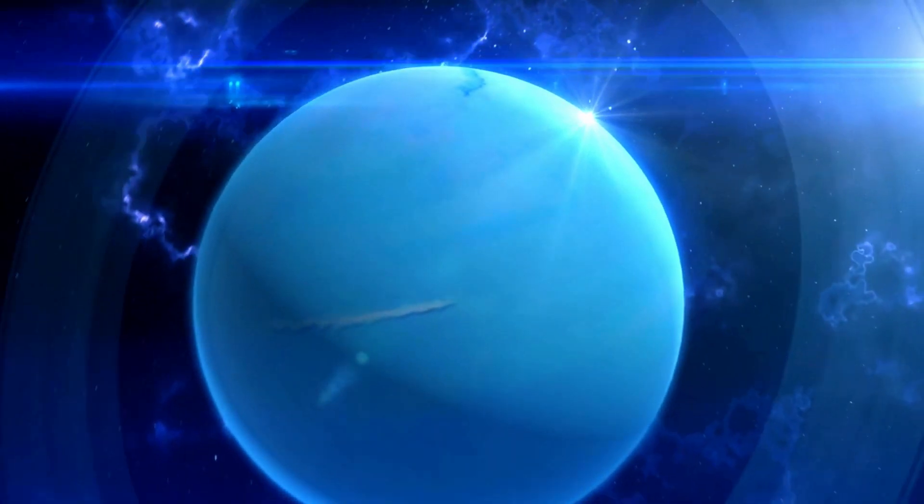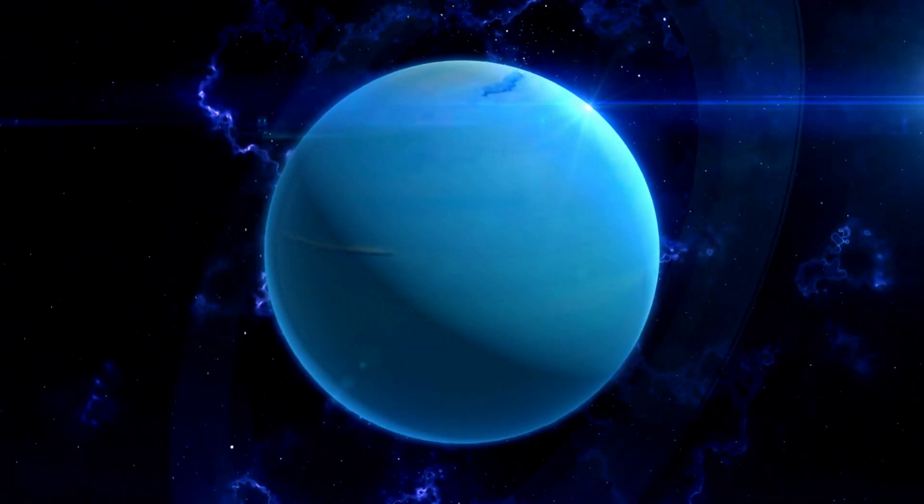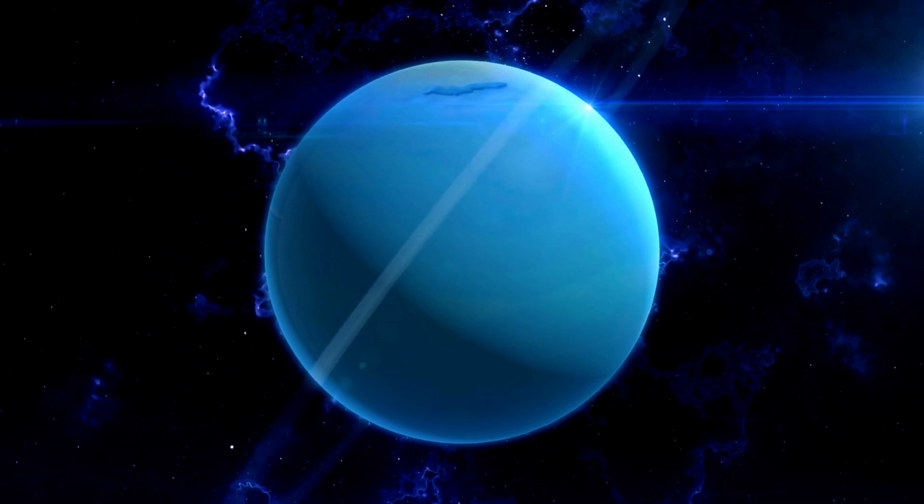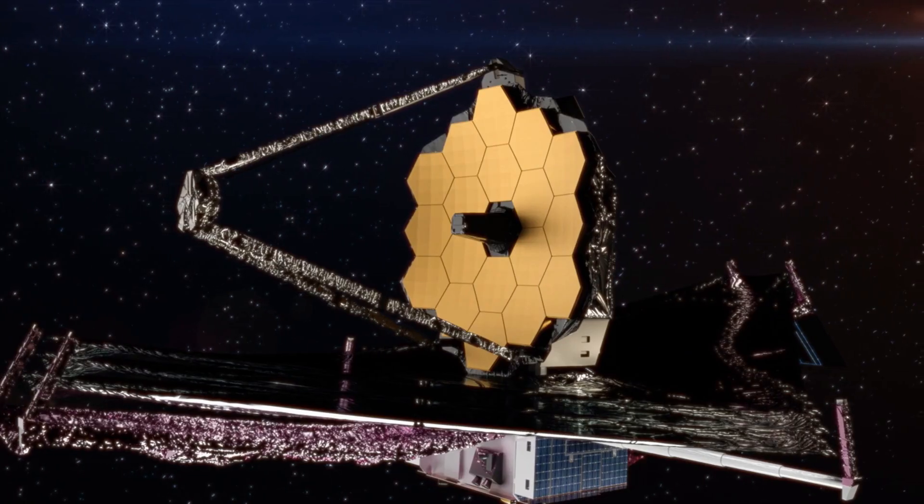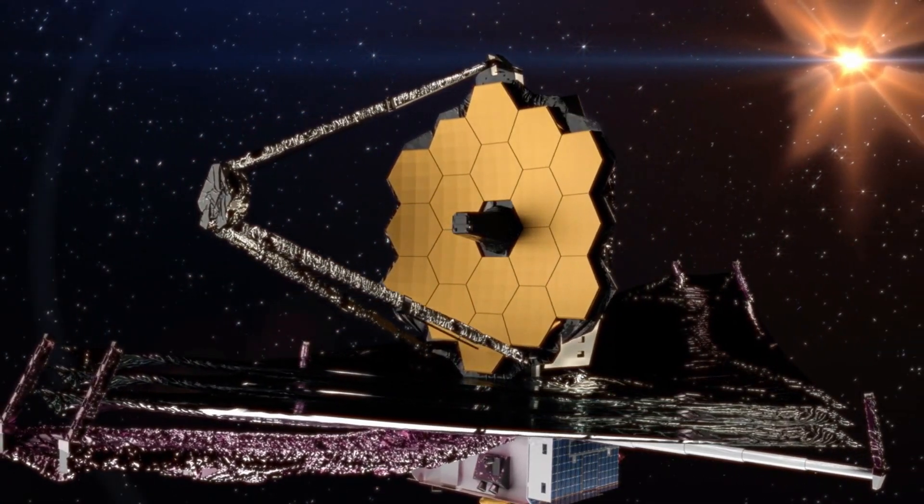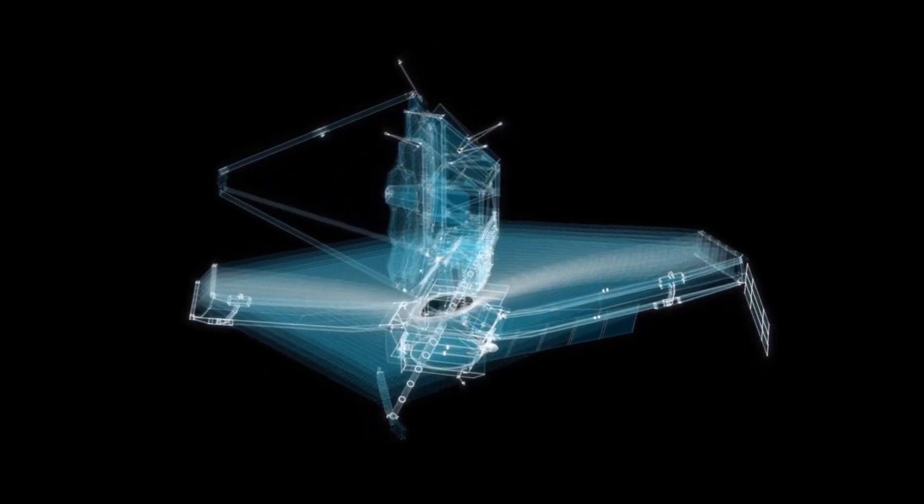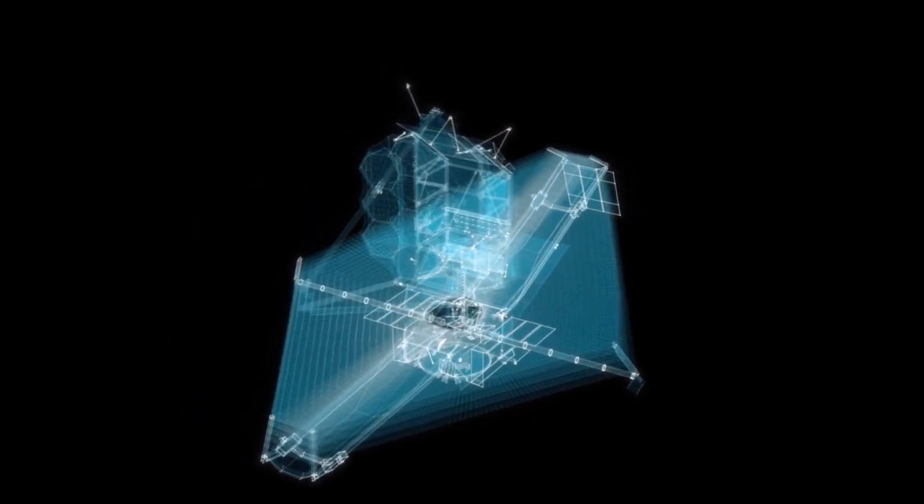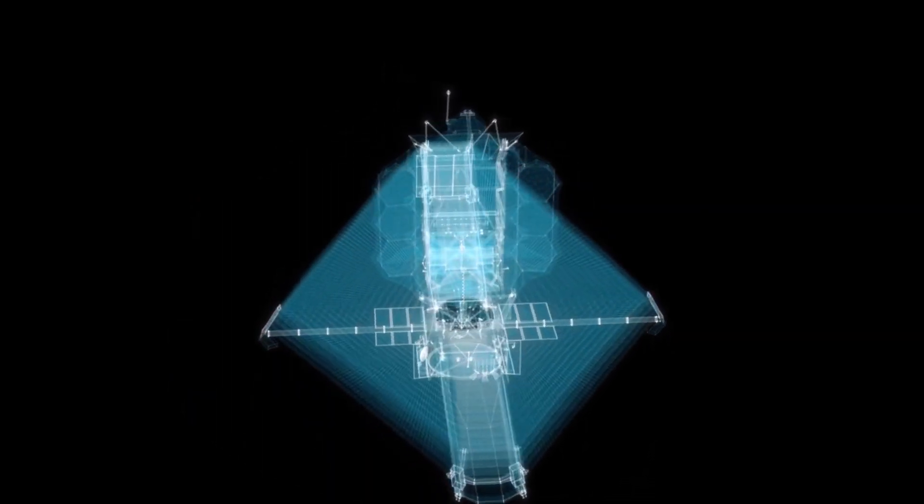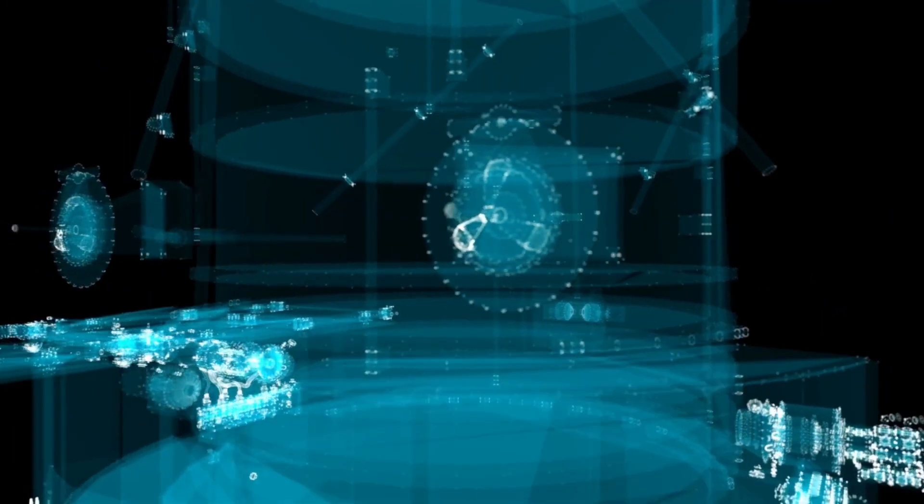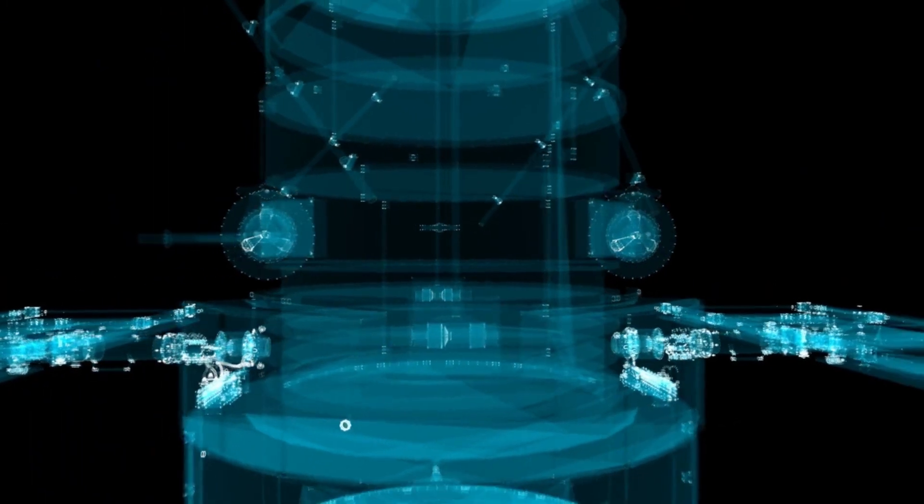To answer these questions, we need a powerful tool that can peer into the depths of space and reveal the secrets of distant planets. That tool is the James Webb Space Telescope, or JWST for short. JWST is a space observatory that was launched in 2021 by NASA, ESA, and CSA. It is the successor of the Hubble Space Telescope, but with much greater capabilities and ambitions.